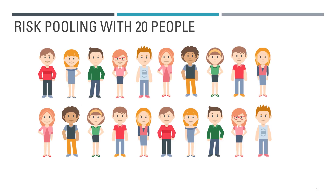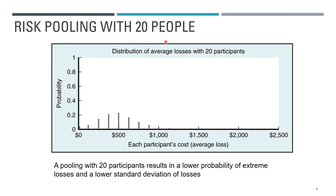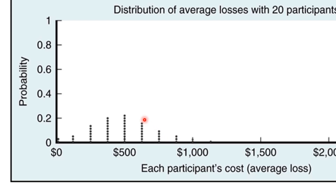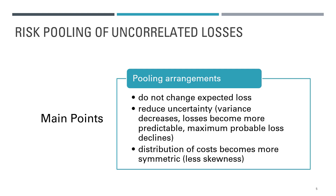What if we add even more participants — say 20 people? Compared to the distribution with four people, with 20 participants the distribution becomes even less skewed. In fact, the distribution looks very much like a bell curve — in other words, normally distributed. The key takeaways are: pooling does not change the expected loss; it reduces uncertainty as shown by the decline in standard deviation and variance; losses become more predictable; and the distribution becomes less skewed and more symmetric. The maximum probable loss also declines.